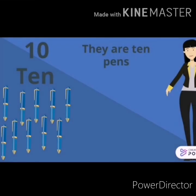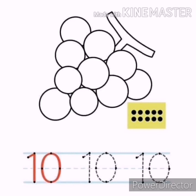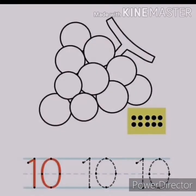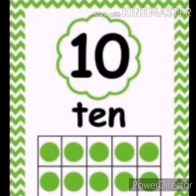What's this number? Number 10. How many pens are there? Let's count: one, two, three, four, five, six, seven, eight, nine, 10. There are 10 pens. What's this number? Number 10. How many dots are there? Let's count: one, two, three, four, five, six, seven, eight, nine, 10. How many dots are there in the 10 frames? Let's count: one, two, three, four, five, six, seven, eight, nine, 10. How many more would you need to get to 10?